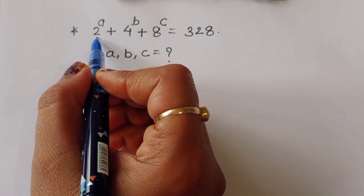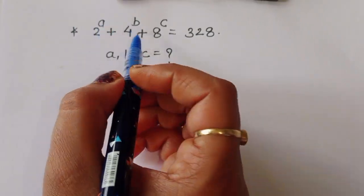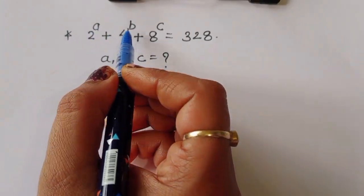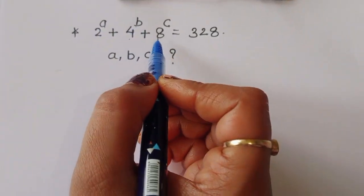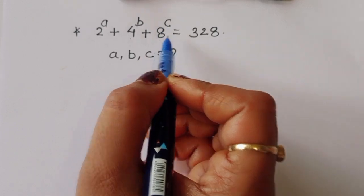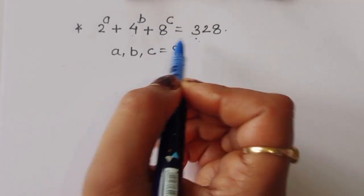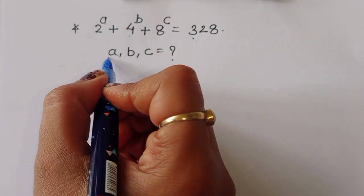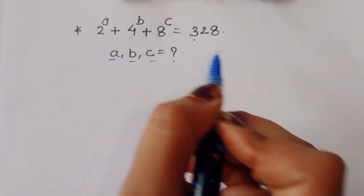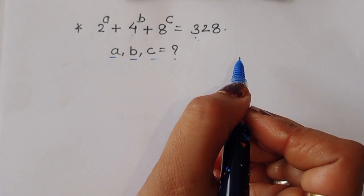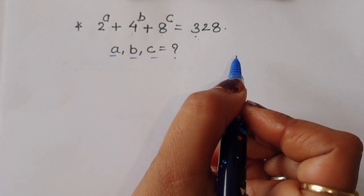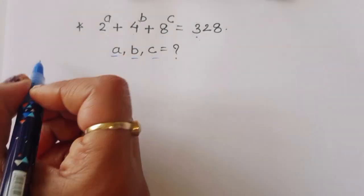The question is: given 2 power A plus 4 power B plus 8 power C is equal to 328. We have to find out the value of A, B, and C. Let's see the solution.